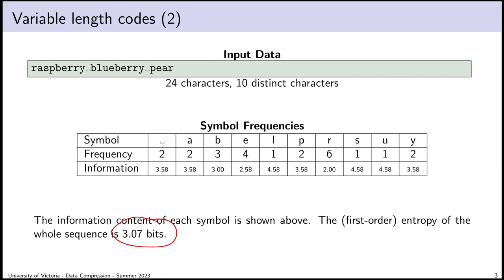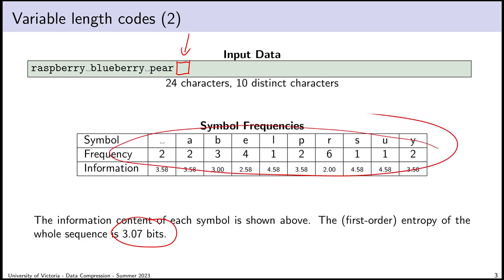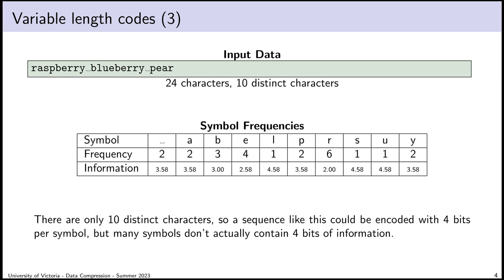Remember, one way to interpret this is: if we think of the sequence as independent observations of the same distribution, the first-order entropy tells us the expected number of bits of information per observation. It's a weighted average of each symbol's information content, weighted by the probability that symbol will appear. Now we can cycle through a few ways to try and achieve compression. One approach — general bit reduction — encodes each of ten distinct characters in four bits, but this doesn't fairly value each symbol.